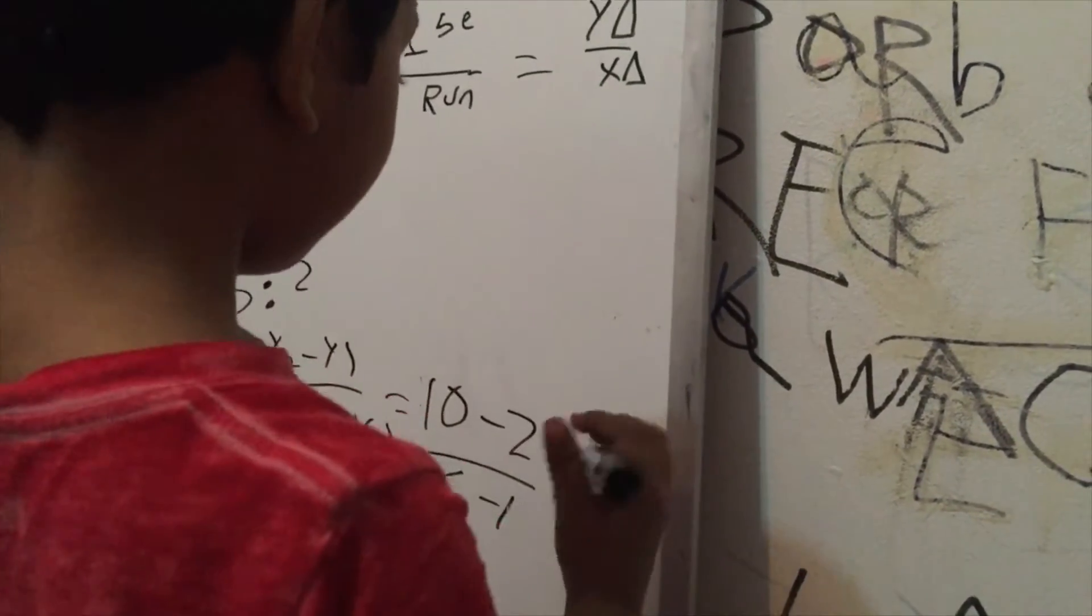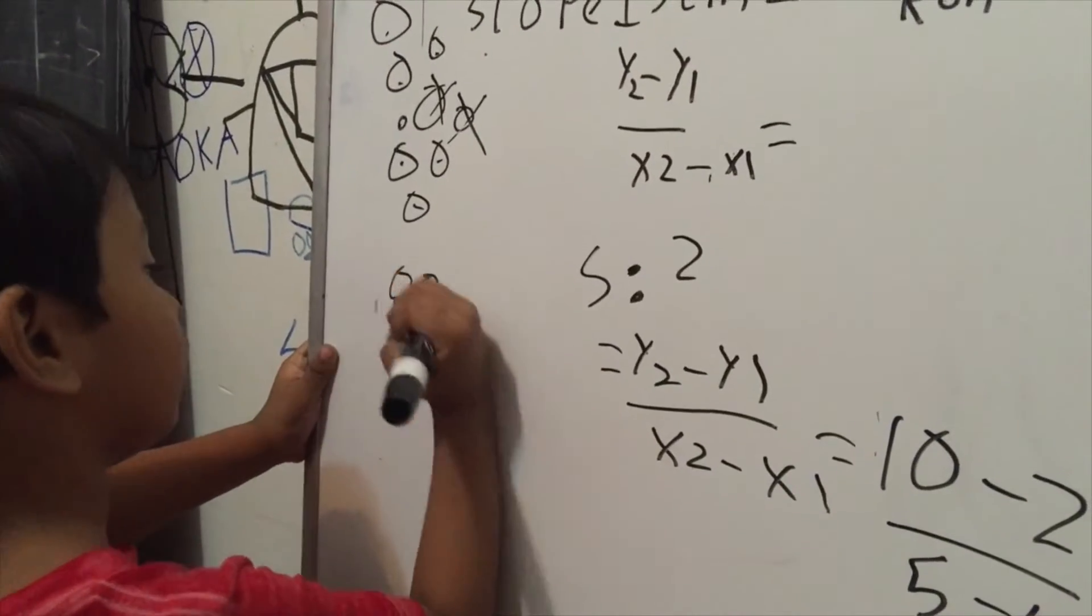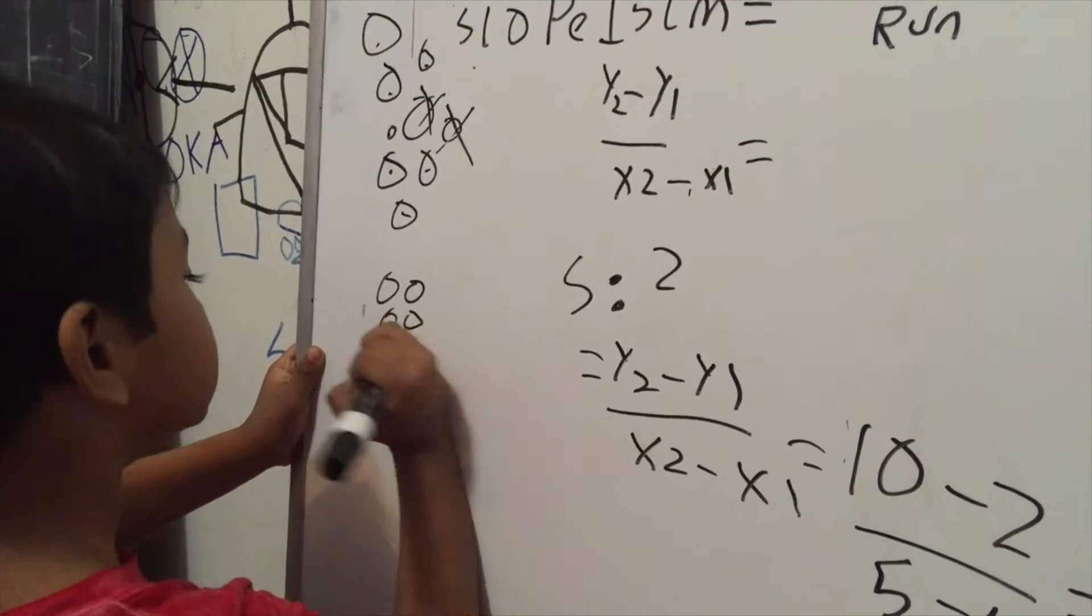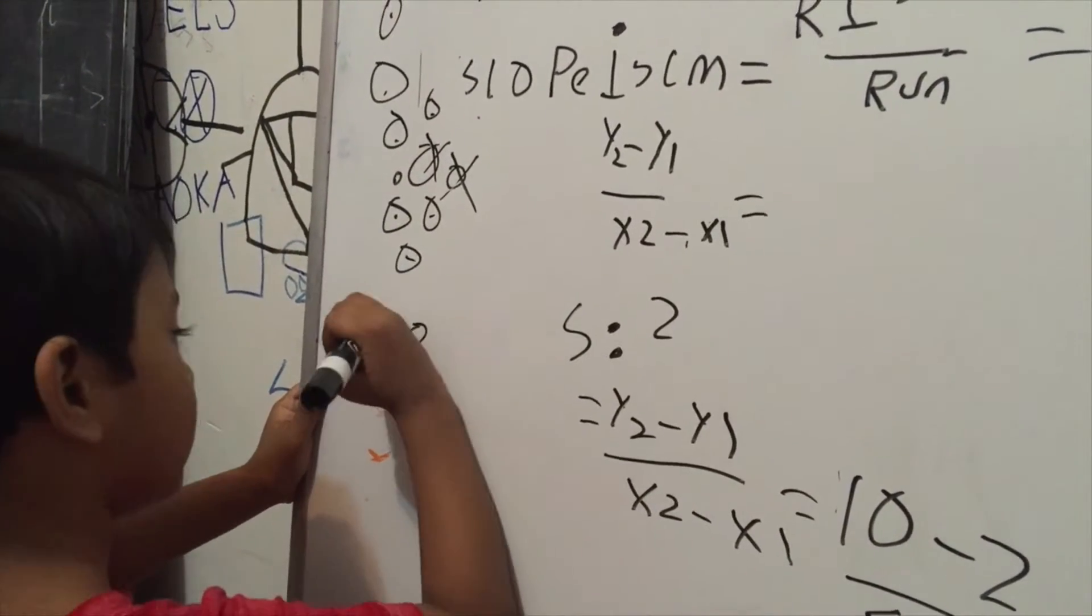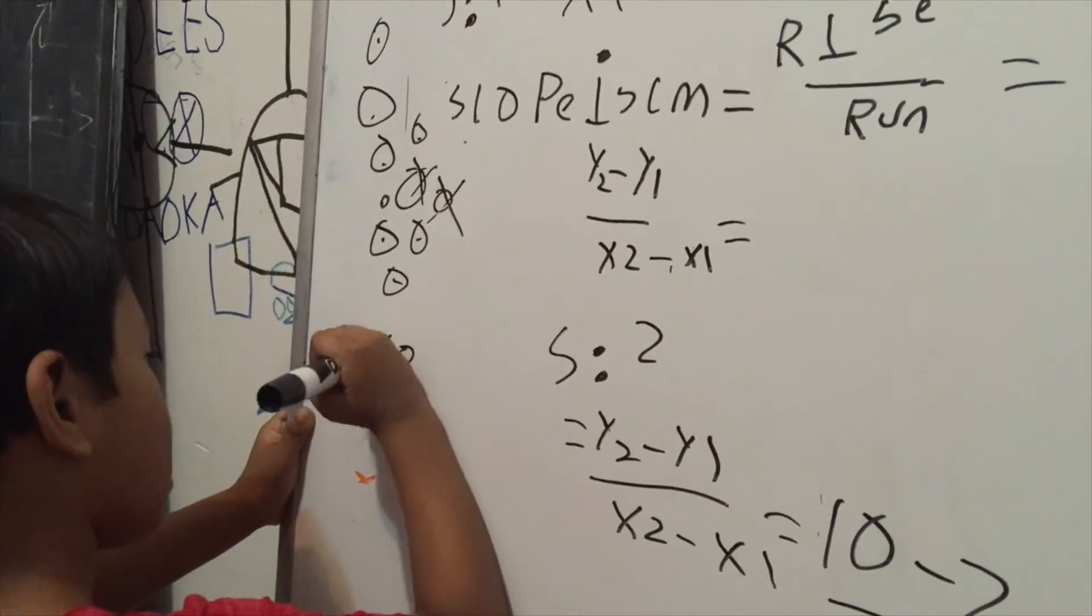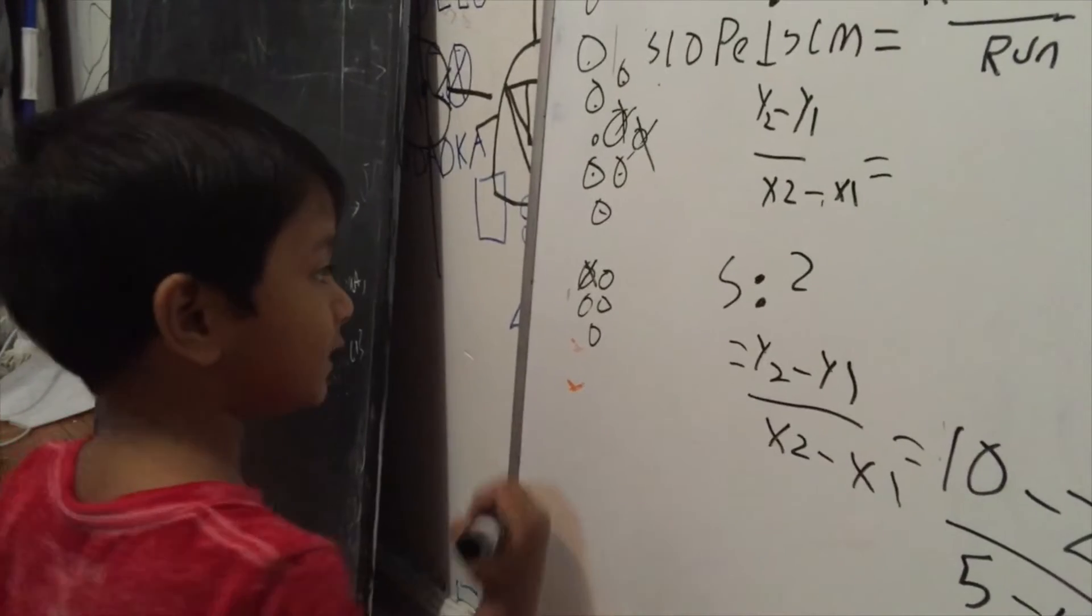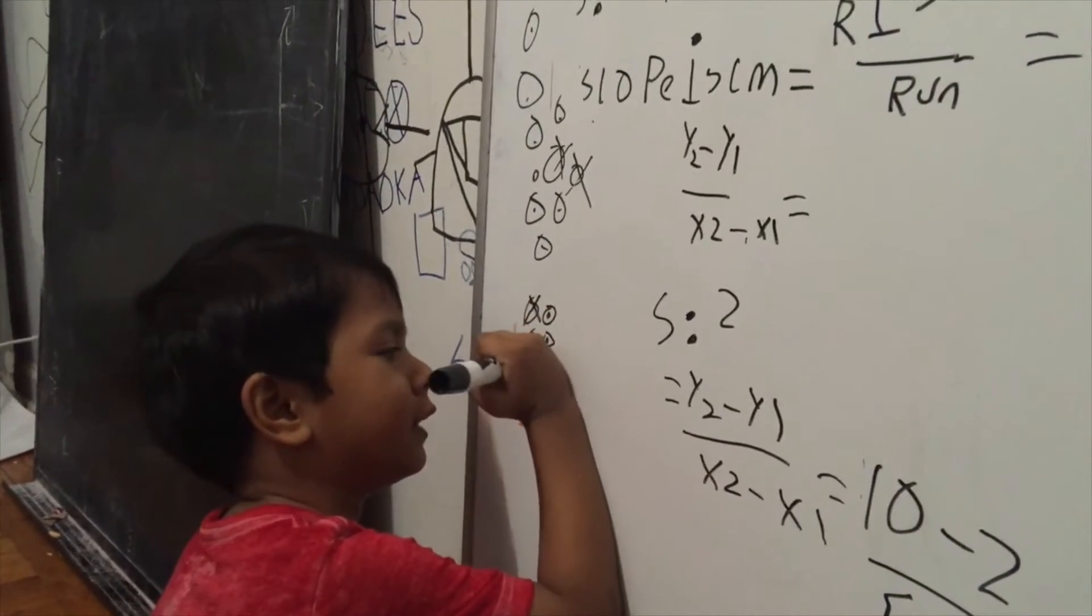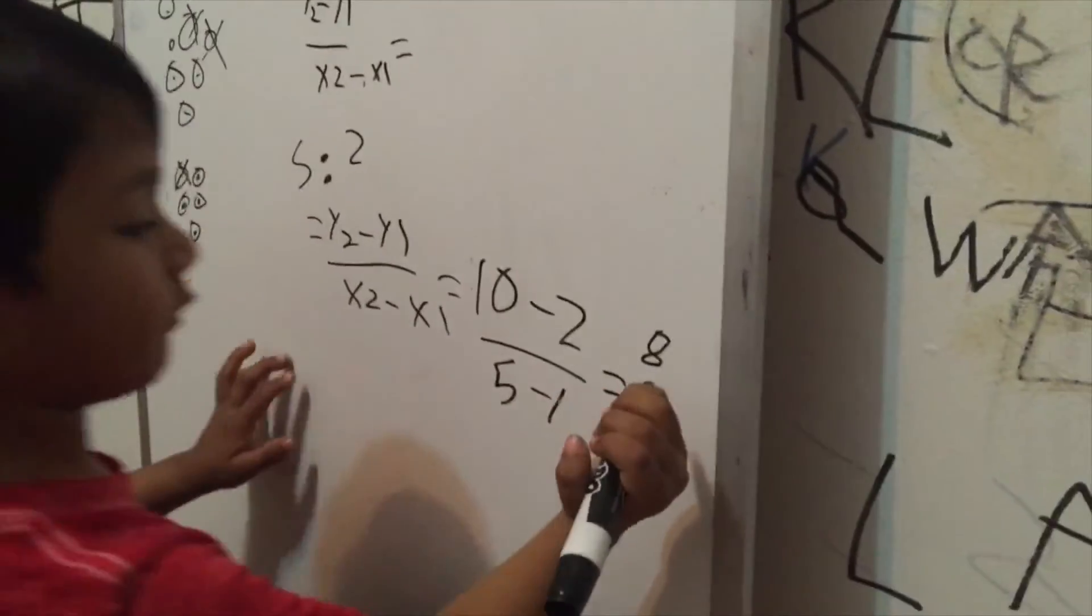Now five minus one. We have one, two, three, four, and five bars. We crossed out one bar. How many bars are left, Daddy? Let's count. One, two, three, four. Eight over four.